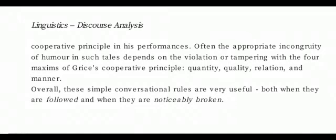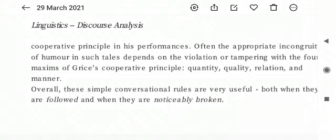Overall, these simple conversational rules are very useful both when they are followed and when they are noticeably broken. These rules are very much like grammar rules present in the mind of a native language speaker — we don't consciously know them but we still follow them. For successful communication, we always need cooperation, following these four principles of quantity, quality, relation, and manner — the cooperative principle given by Paul Grice.